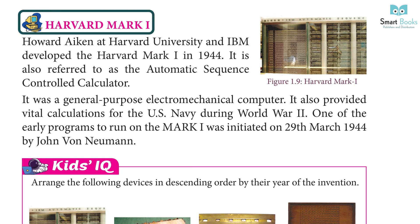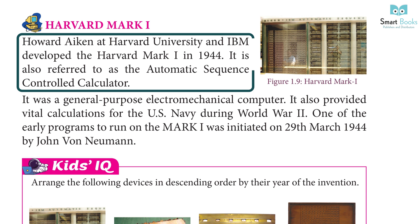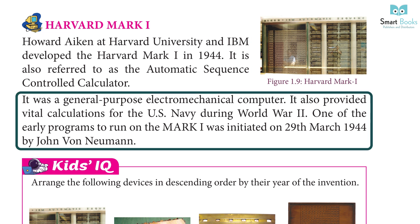Harvard Mark I: Howard Aiken at Harvard University and IBM developed the Harvard Mark I in 1944. It is also referred to as the Automatic Sequence Controlled Calculator. It was a general-purpose electromechanical computer. It also provided vital calculations for the U.S. Navy during World War II. One of the early programs to run on the Mark I was initiated on 29th March 1944 by John von Neumann.